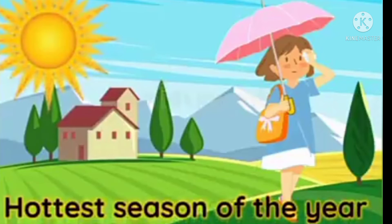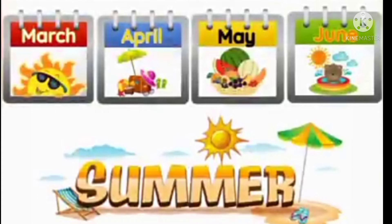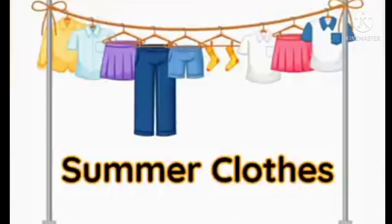Summer season is the hottest season of the year, which means we feel extremely hot during summer. The weather is very hot and the sun shines very brightly. Summer season lasts from March to June — that is March, April, May, June. During these months we feel very hot.